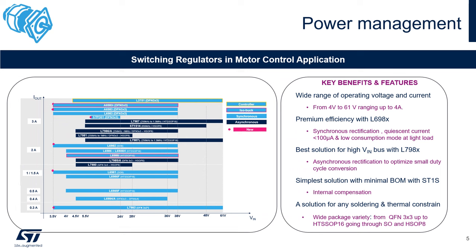Power management is needed to regulate your bus voltage or DC voltage to supply a microcontroller or drivers. Since ST offers a large portfolio, selecting the right product isn't always easy. If you need efficiency — for example, because you have a battery in front of your motor — you could go with the L698X family, which is perfect for efficiency applications thanks to synchronous rectification and the crescent current.